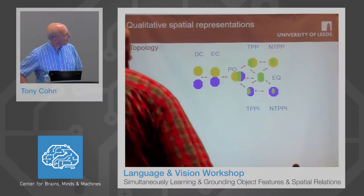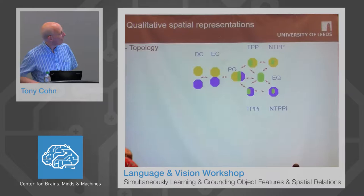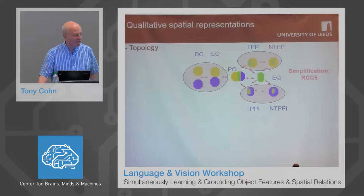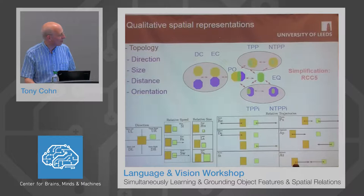Here you can see the eight relationships of the region connection calculus: disconnected, externally connected, partially overlapping, two different proper part relationships — tangential and non-tangential — their inverses, and equality. Typically, for most vision work, it's better to use a simplified version where we ignore the tangency relationships, and so we get this version called RCC5. But of course, that's not the only kind of qualitative spatial relationship you might want to have.